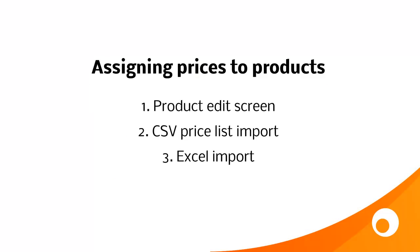Once you've assigned a price list to contacts, the next thing you need to do is assign the actual prices themselves to products. You can either do this one at a time from the product edit screen, or you can import a CSV price list or an Excel spreadsheet. If you import a CSV file, it supports volume discounts or tiered pricing, but if you import from Excel, it just supports unit pricing.